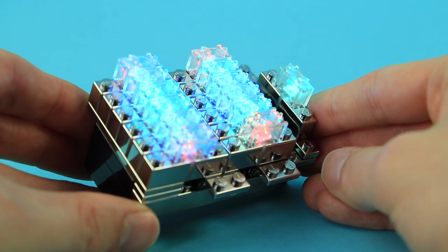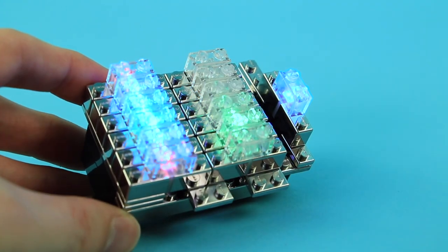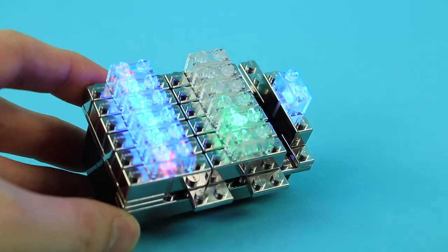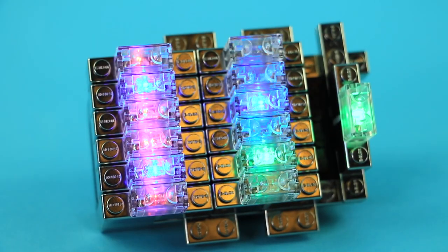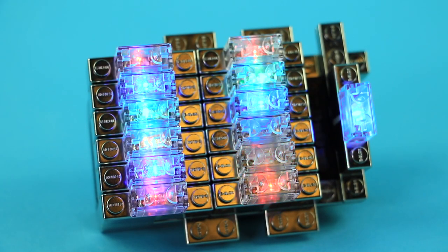So all of your LEDs should be lighting up, the color changing one should be changing color, flashing one should be flashing, and the plain color one should just be steady on.